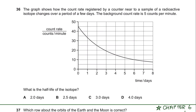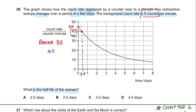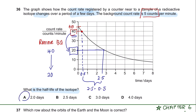Question 36. The graph shows how count rate near a radioactive isotope changes over a few days. The background rate is 5 counts per minute. What is the half-life of this isotope? First, remove the background radiation: 45 − 5 = 40 counts per minute. Half of 40 is 20 counts per minute—that is one half-life. At 20 counts per minute, the time is 2.5 days. So the half-life is 2.5 − 0.5 = 2 days.